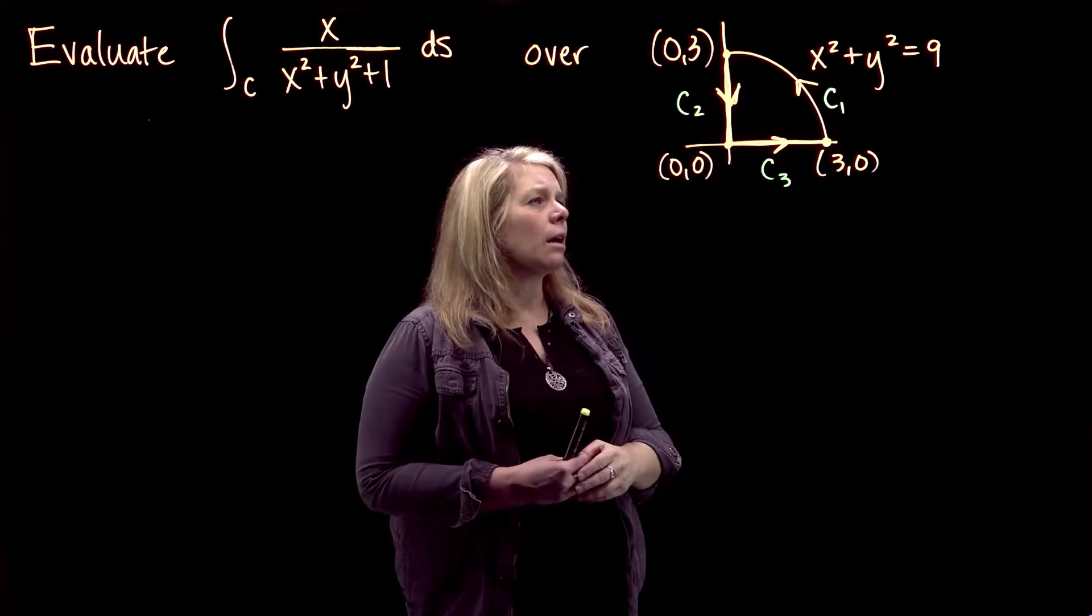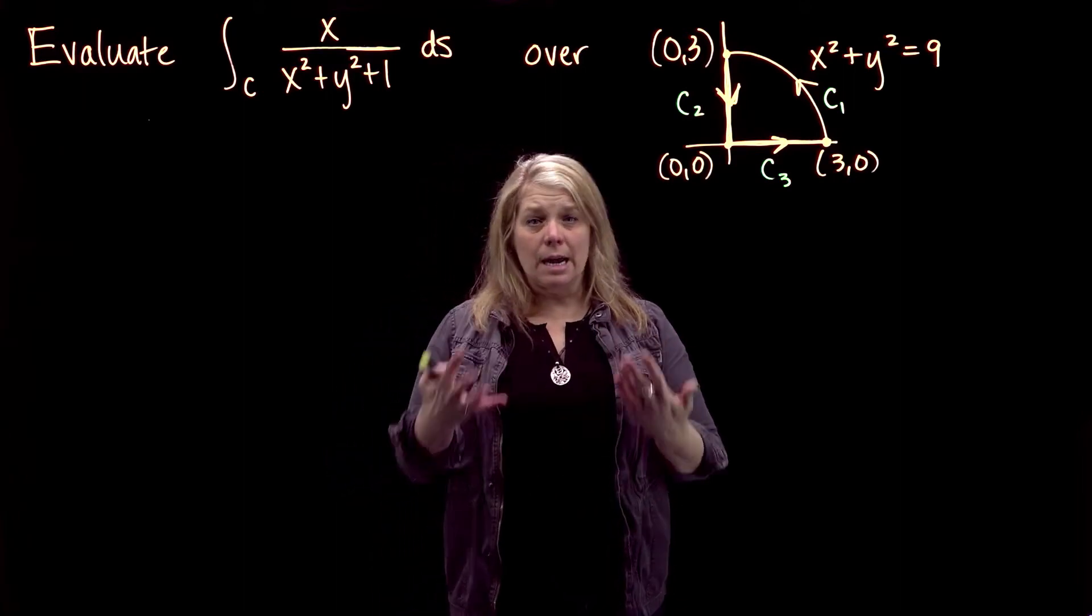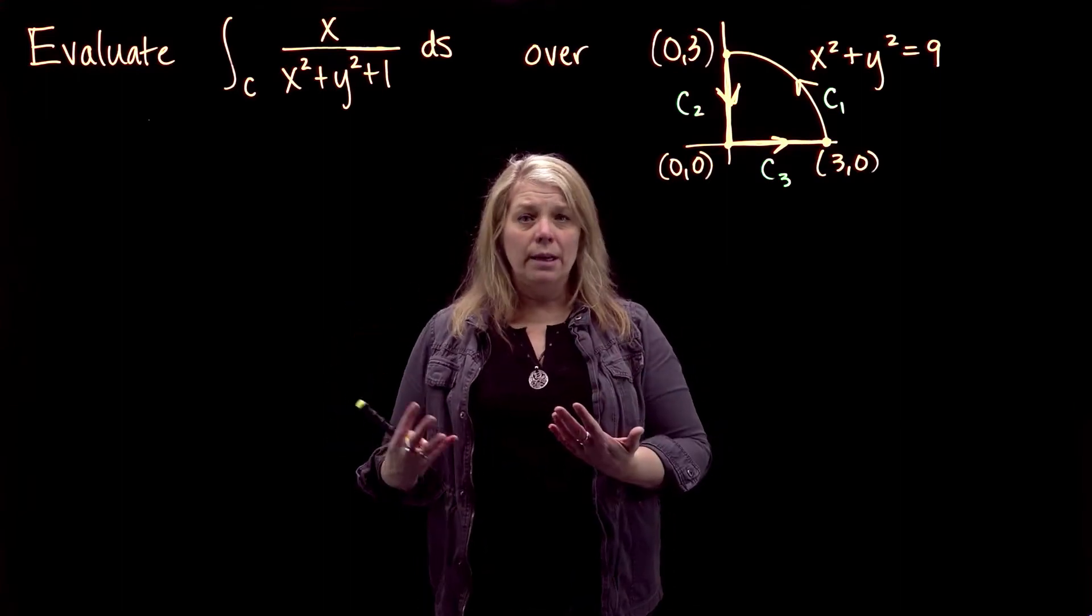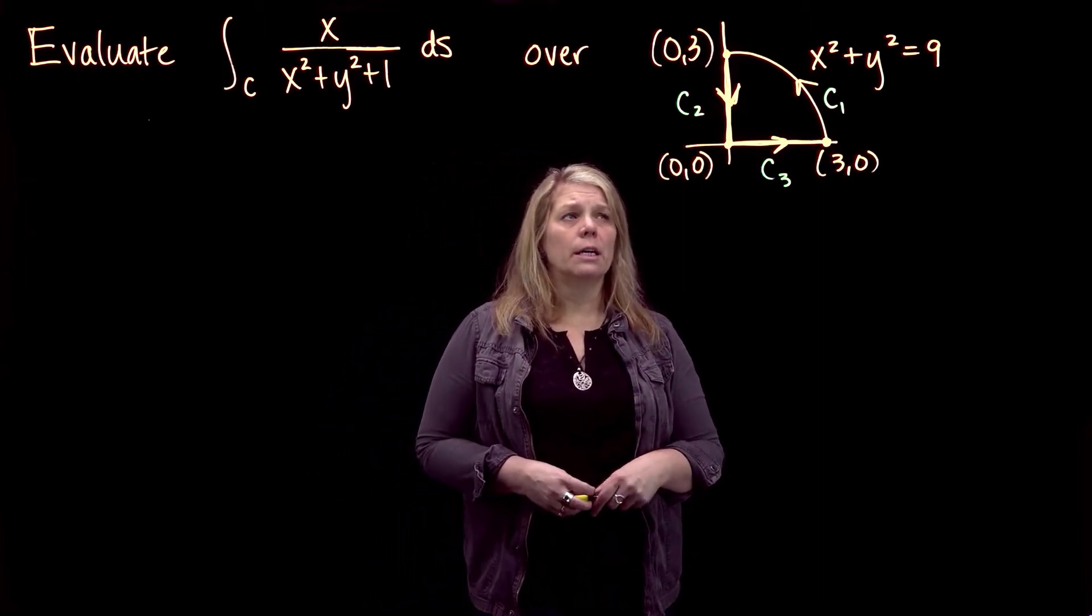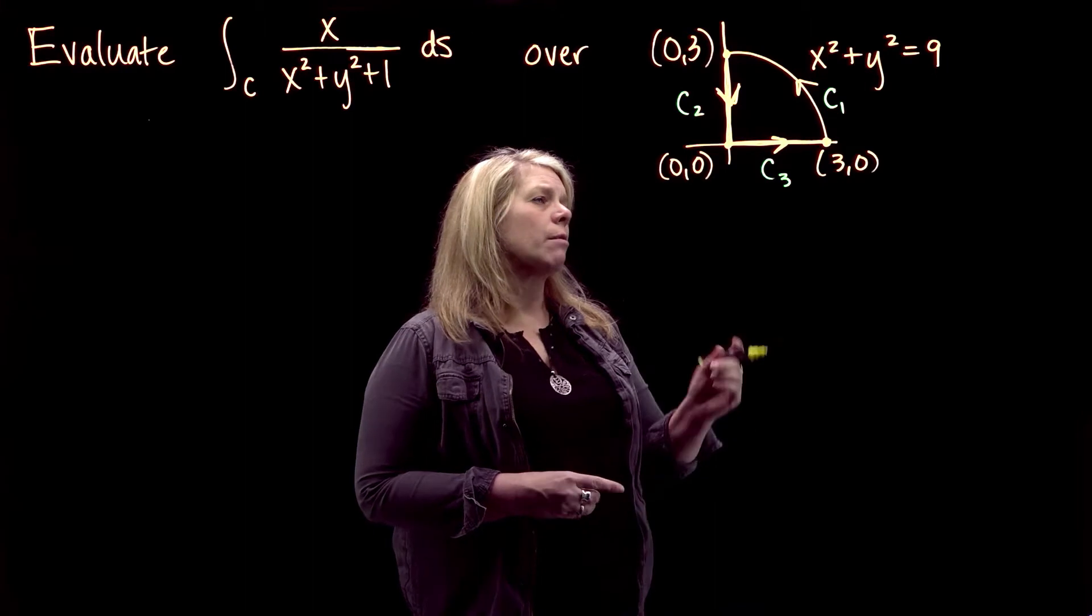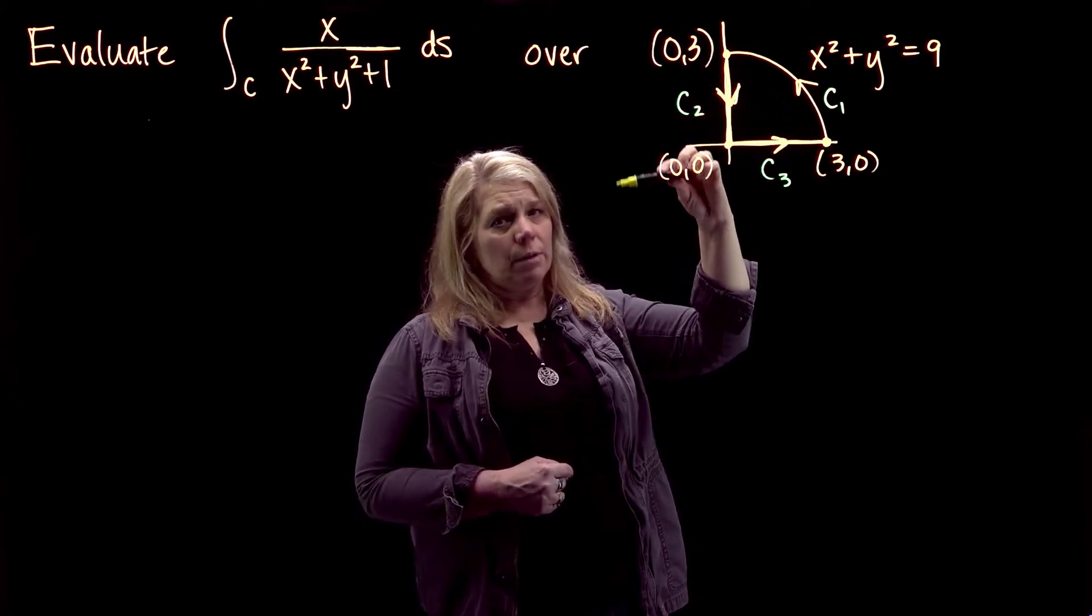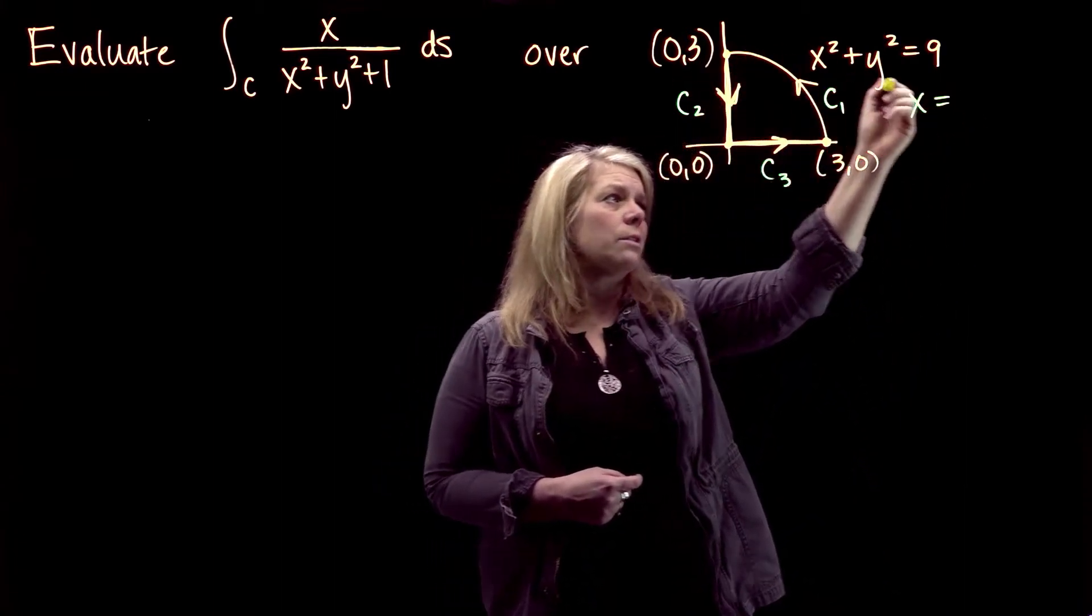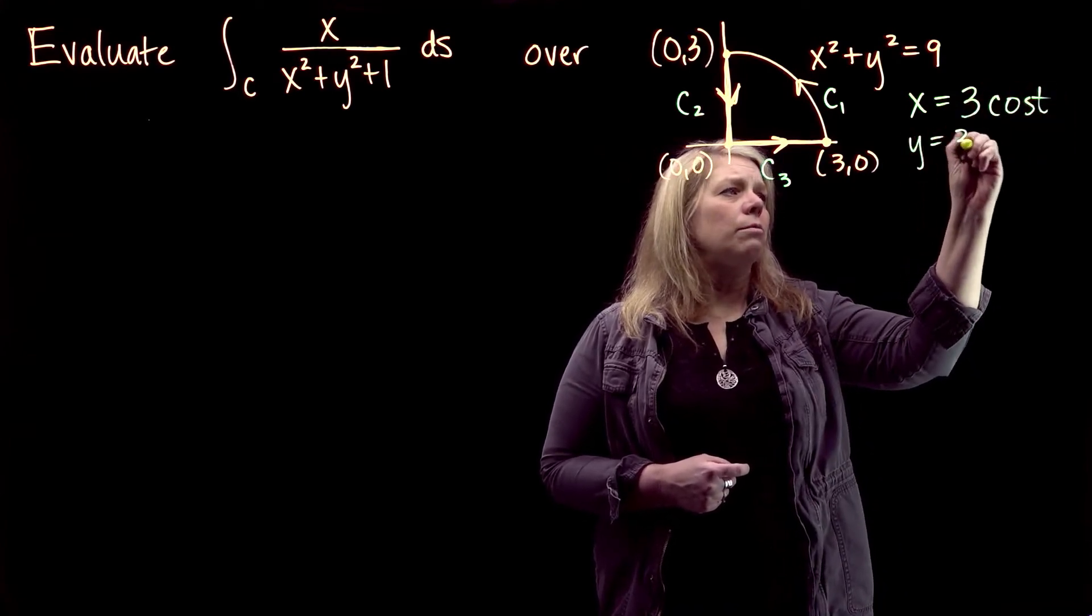For C1, we are along an arc of a circle, radius 3, centered at the origin. This is one of those standard parametrizations that you would have done in Calculus 2 when you worked with parametric equations. The orientation here is counterclockwise. The simplest parametrization for this circle would be to let x equals 3 cosine t and y equals 3 sine t.